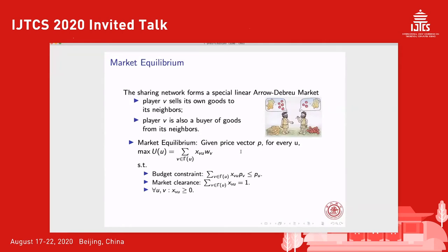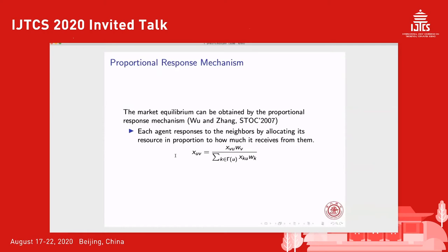The utility of each agent is defined as the total received resource from his neighbors. Such a resource sharing network forms a special linear Arrow-Debreu market, where each participant sells his own goods to neighbors and buys goods from neighbors. The desired solution concept is called market equilibrium: given a fixed price vector, each agent's utility is maximized under the constraints of budget constraint and market clearance. The market equilibrium solution can be obtained by a mechanism called the proportional response, where each agent allocates his resource proportionally to how much he receives from each neighbor.